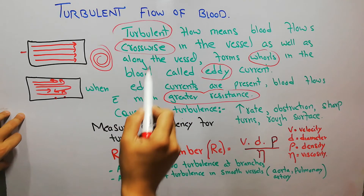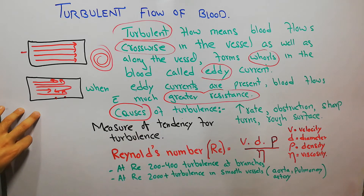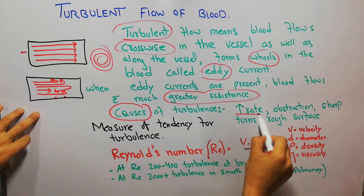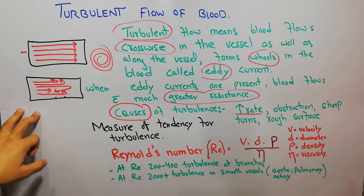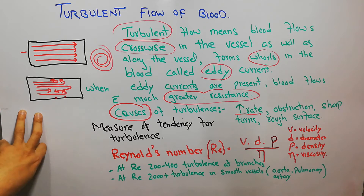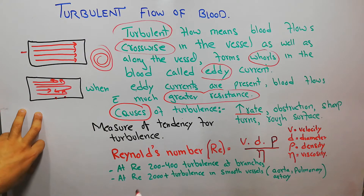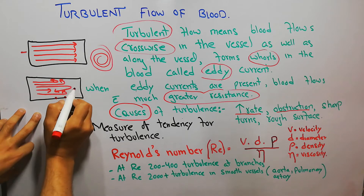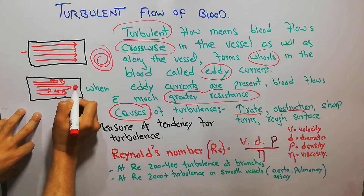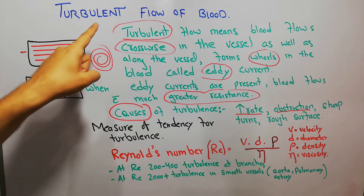The causes of turbulence include: first, increased rate of blood flow — in vessels where blood is flowing at a high rate, there is a high chance of turbulence occurring. The second reason is obstruction: if the blood vessel has been obstructed by something such as a blood clot or a rough surface, it will also lead to turbulent flow.